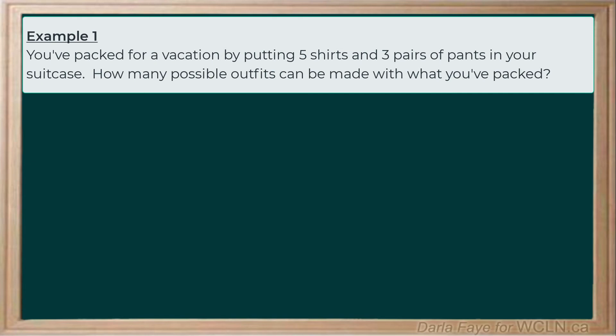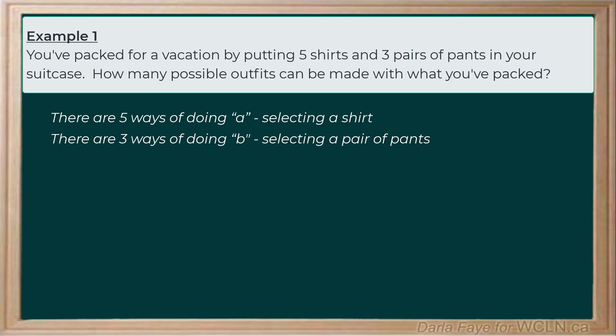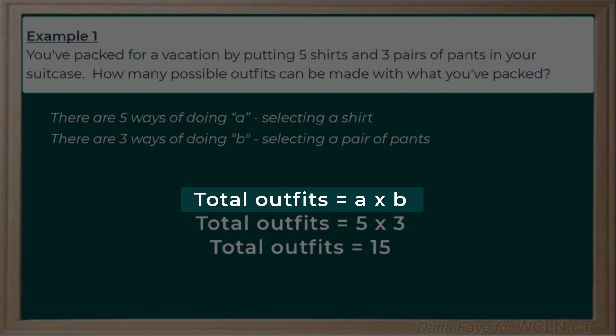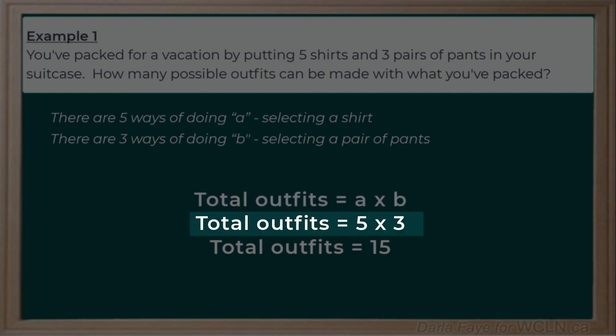Now, let's lay out what we know. There are five ways of doing task A — in this case, that's selecting a shirt. There are three ways of doing task B — in this case, that's selecting a pair of pants. And so to determine the total number of possible outfits, both task A and task B, I'm simply going to multiply those two numbers together. A times B is going to give me the total number of outfits. I'm going to take five times three and that will give me 15 total outfits that I've packed into my suitcase.